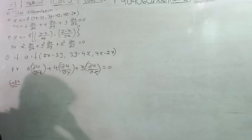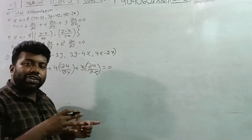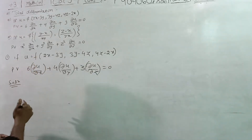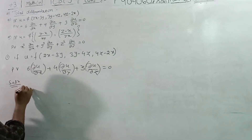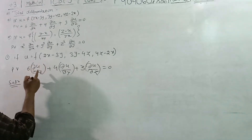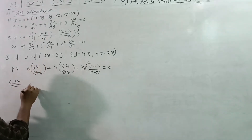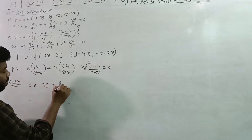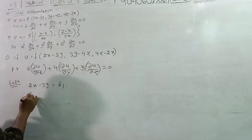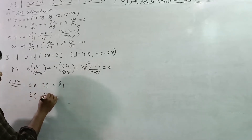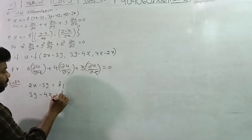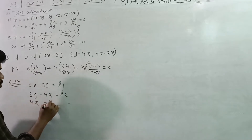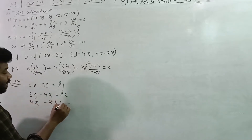We define: t1 equals 2x minus 3y, t2 equals 3y minus 4z, and t3 equals 4z minus 2x.